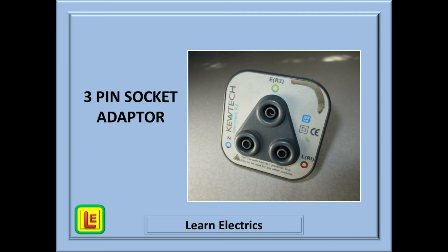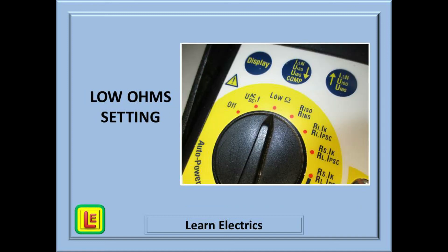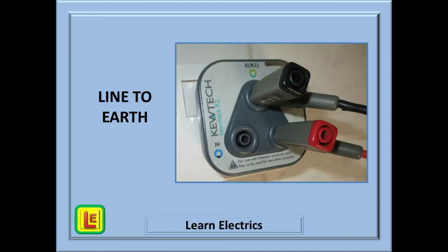I would recommend using a three-pin socket adapter for the next steps. It is a lot easier than removing socket covers, and some meters come with a three-pin lead that will do this job for you. Set your meter to low ohms resistance. Check that it is working correctly and that the leads are nulled out. We have connected line and earth together at the consumer unit, so now we test at each socket with our leads in the line and earth terminals.